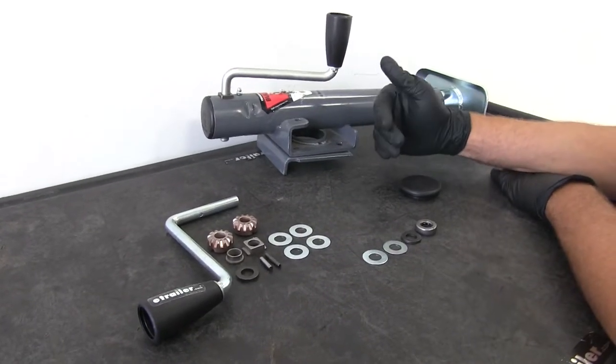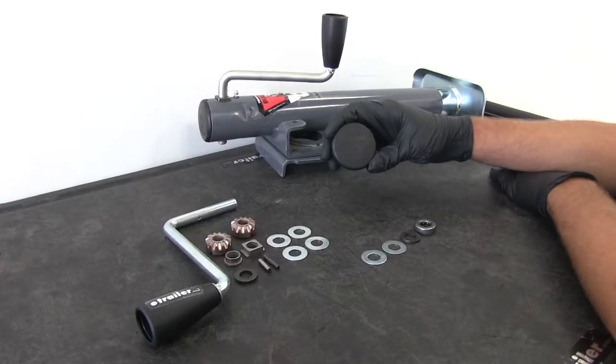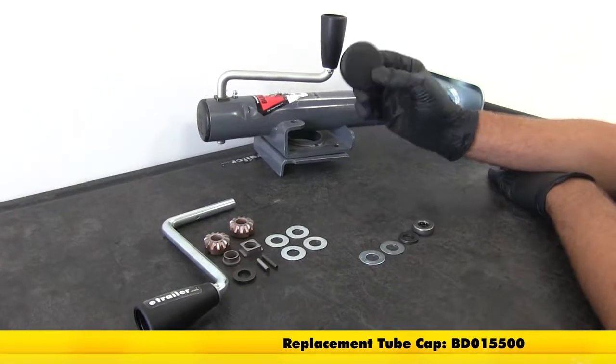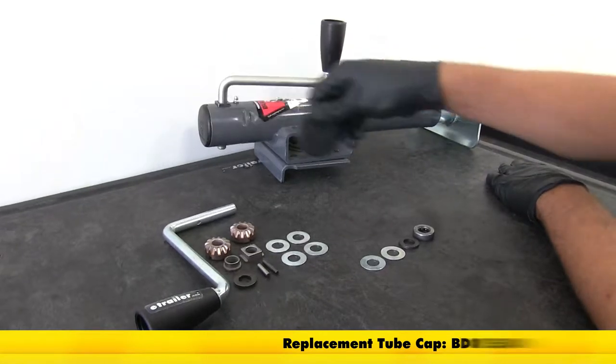Depending on your needs, you'll need three different parts. We've got our replacement cap here, part number BD015500. You may or may not need this if yours is undamaged, but it is important to keep dirt and debris from getting in the top of your jack.